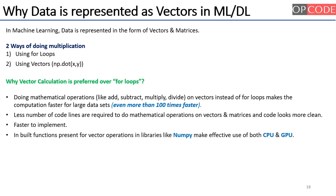Inbuilt functions present for vector operations in libraries like NumPy make effective use of both CPU and GPU. And this is very important. Because in case of deep learning, we are dealing with CPUs and GPUs. And since we need to do these multiplication operations on millions of data sets, it's very important to make effective use of CPUs and GPUs.